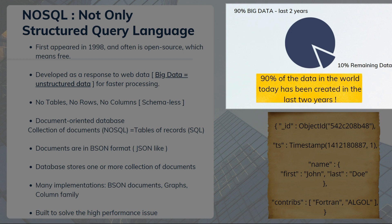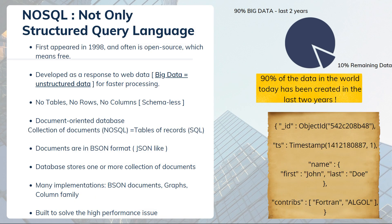Fun fact: 90% of the data in the world today has been created in the last two years. Every day we create 2.5 quintillion bytes of data. Not only can NoSQL systems handle both structured and unstructured data, but they can also process unstructured big data quickly. This led organizations like Twitter, LinkedIn, Facebook, and Google to adopt NoSQL systems because of the tremendous amount of unstructured data that a normal SQL database cannot contain.